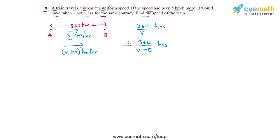What the problem tells us is that this time is one hour less than this time, so we can write this as 360 by v and 360 by v plus 5. The relation between these two quantities is that this quantity on the right side is one less than this quantity on the left side, or we can write this as 360 by v is equal to 360 by v plus 5 plus 1.